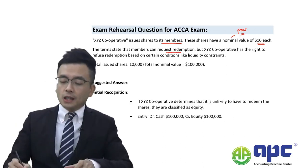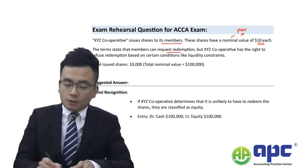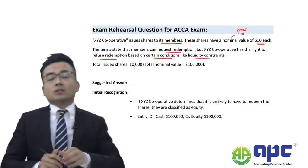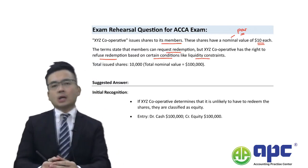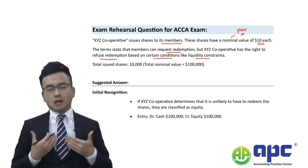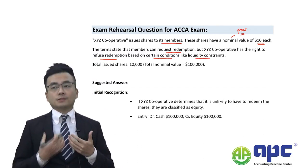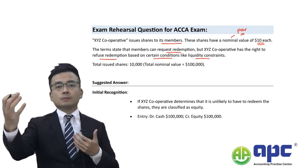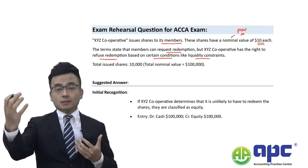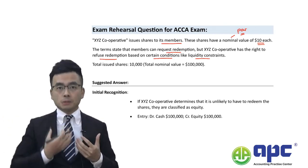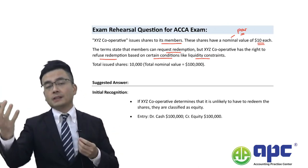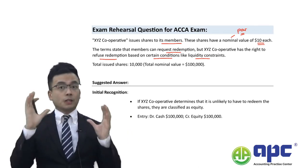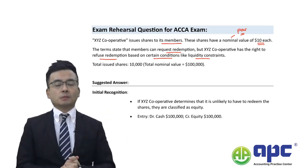However, the XYZ cooperative has the right to refuse redemption based on certain conditions, such as a liquidity constraint. So as a member, I buy shares from the cooperative and I can require the cooperative to pay the money back to me. However, the cooperative may say that if it has a cash flow problem, it does not have to repay the money back to me.